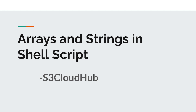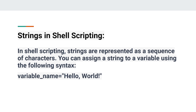Today I'm going to explain arrays and strings in shell script. In shell scripting, strings are represented as a sequence of characters — they are represented in the order we write them. We can assign a string to a variable using this syntax: write the variable name without a space, add an equal sign, and without any space write your message inside inverted commas. That is the basic syntax.